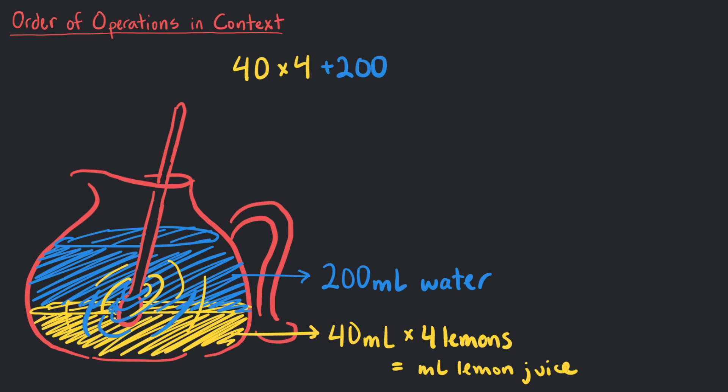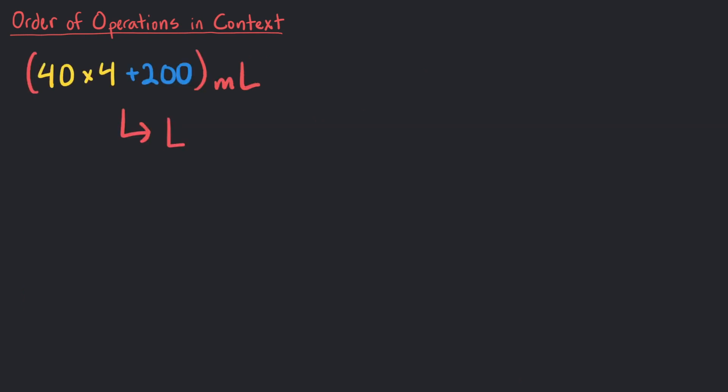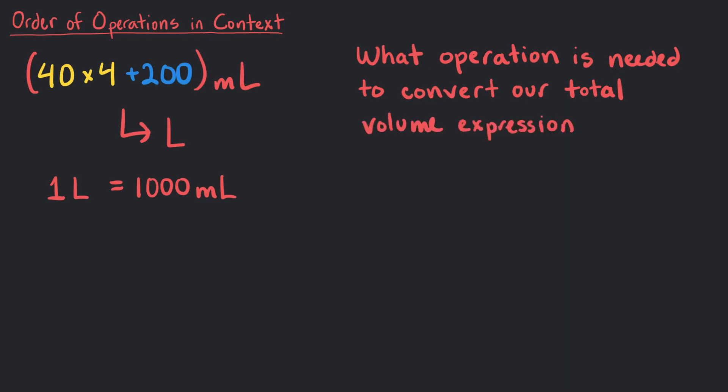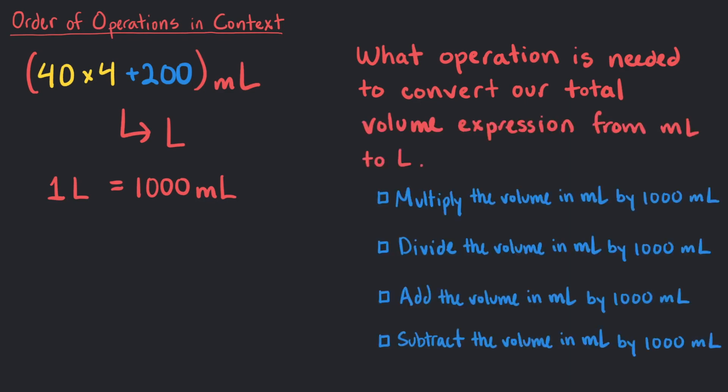Let's convert the units of milliliters to liters. If 1 liter is 1000 milliliters, what operation is needed to convert our total volume expression from milliliters to liters? This one is tricky.